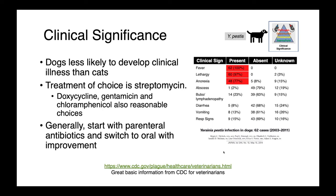In dogs, plague is much less likely to manifest as clinical disease — most commonly we see no clinical signs at all. If we do have clinical disease, the treatment of choice is streptomycin, although doxycycline, gentamicin, and chloramphenicol are also reasonable choices. Typically we start with parenteral antibiotics, giving something IV, and then switch to oral with improvement.